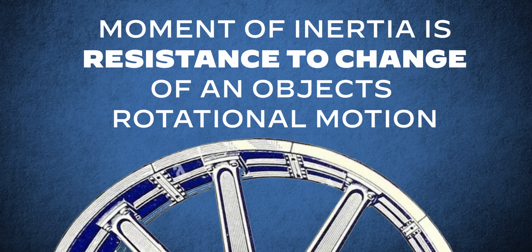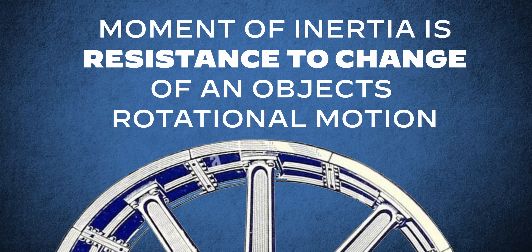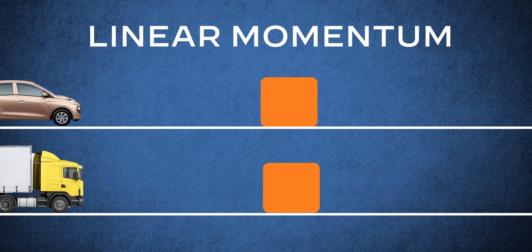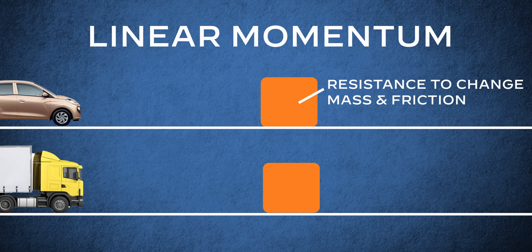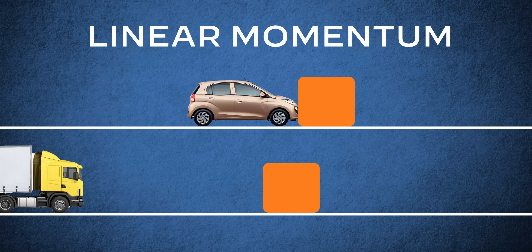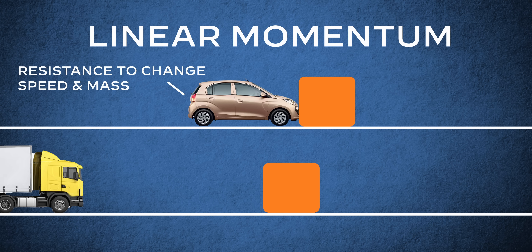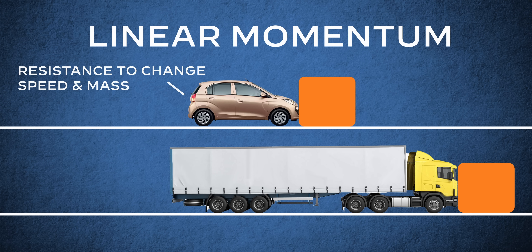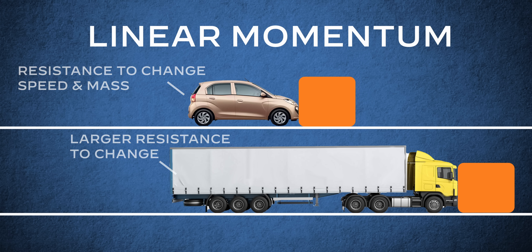To put it simply, moment of inertia is resistance to change of an object's rotational motion. An easy way of understanding this is to look at linear momentum. This orange square has a resistance to change through mass and friction. When the small car drives into the orange block, the resistance to change of the orange block will slow the car down. The small car itself also has a resistance to change — its speed and mass.